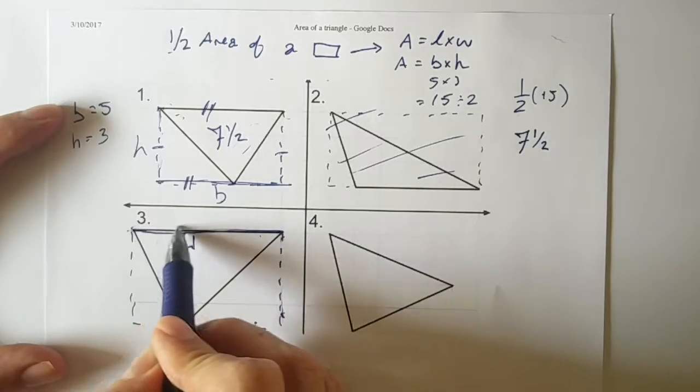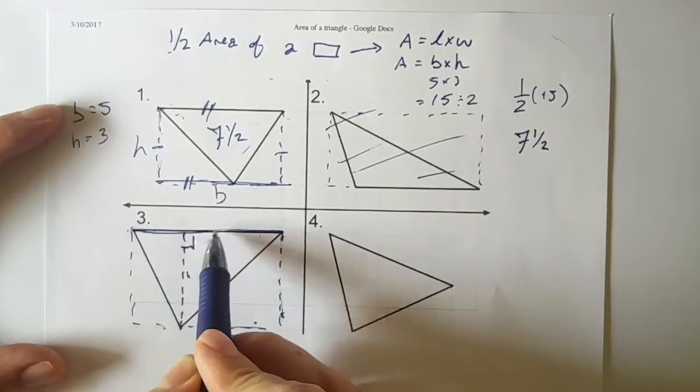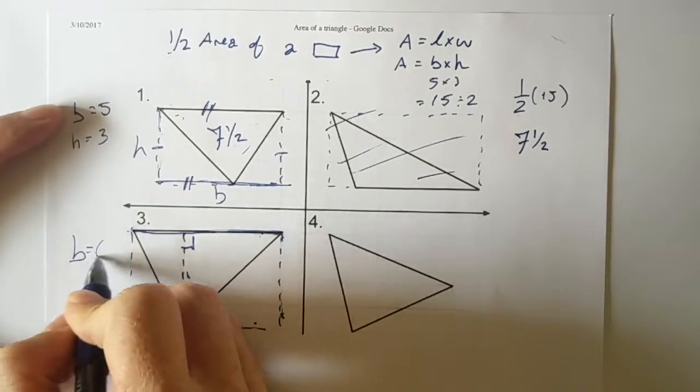But what's the base of this triangle? The base of this triangle is 1, 2, 3, 4, 5, 6. Let's just recount: 1, 2, 3, 4, 5, 6. So the base of this is 6.